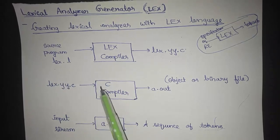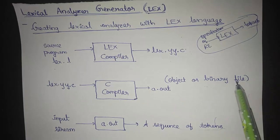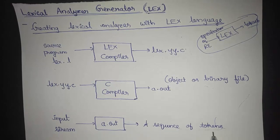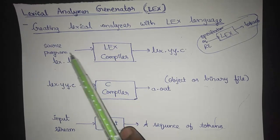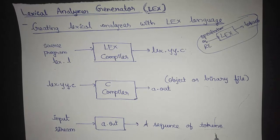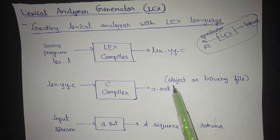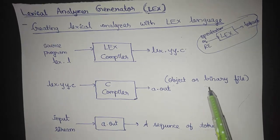So lex.yy.c is then sent to the C compiler which generates an object or a binary code. From the source code we are getting the binary code. This binary code is then sent for the execution as an input stream to generate a sequence of tokens. From the source program we are going to get a sequence of tokens wherein we have the intermediate object or binary file being generated.